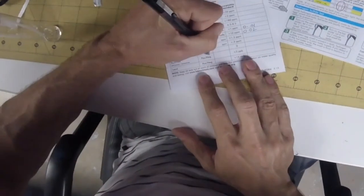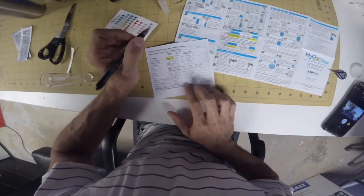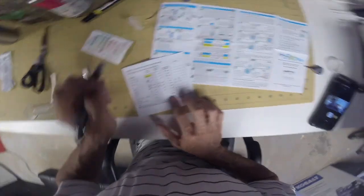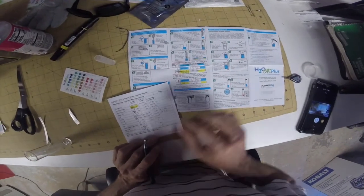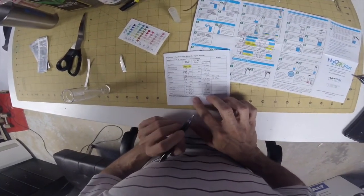So pesticide negative, lead negative. It says acceptable 15 parts per billion or whatever. I don't know what this means over here, but it's a negative. And we're waiting on that one.